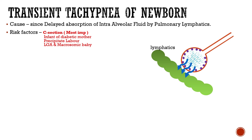Most important among the risk factors is caesarean section. C-section involves no stress to the baby, unlike vaginal birth where the baby undergoes so much stress that the respiratory system is cleared off. Hence, in caesarean section, no such stress is delivered to the baby and the baby may develop TTN.